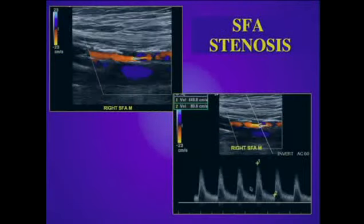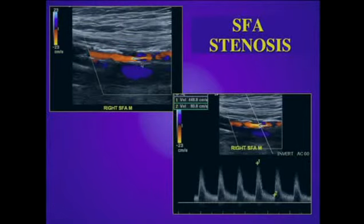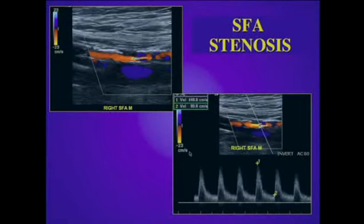Here's an example of a superficial femoral artery stenosis. On the color Doppler image, we can see that there's marked wall calcification, narrowing of the lumen, and aliasing at the site of the stenosis. This is helpful because we can place the sample volume across this lesion to determine the peak systolic velocity within the stenosis. In this case, the highest velocity within the stenosis in the superficial femoral artery is approximately 450 centimeters per second.